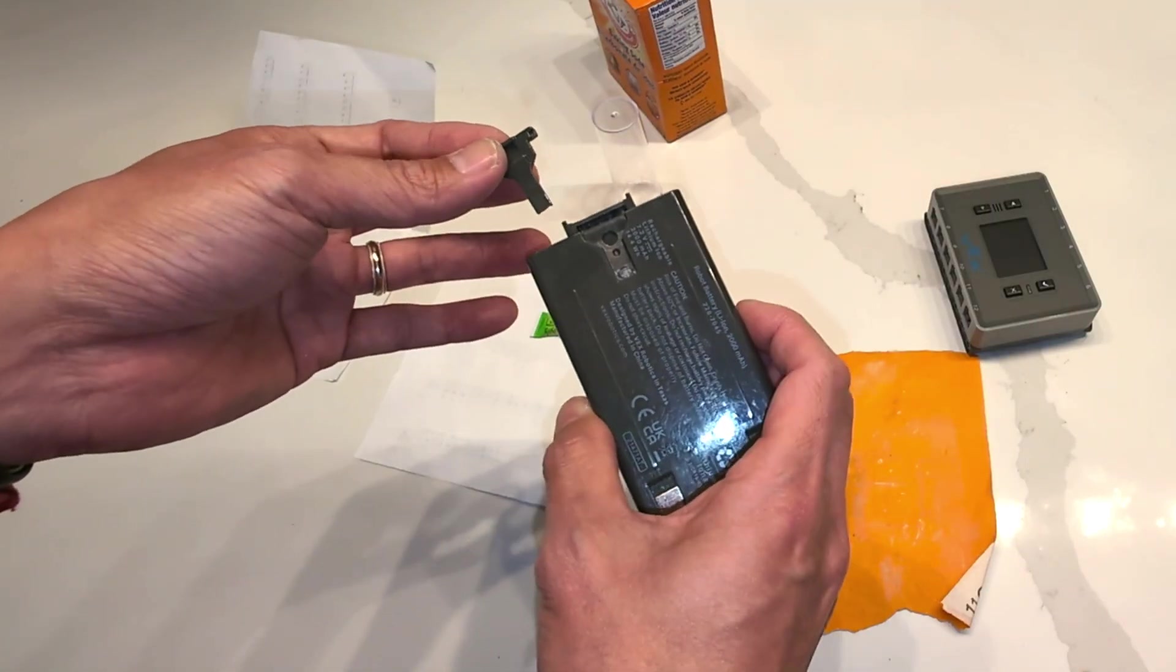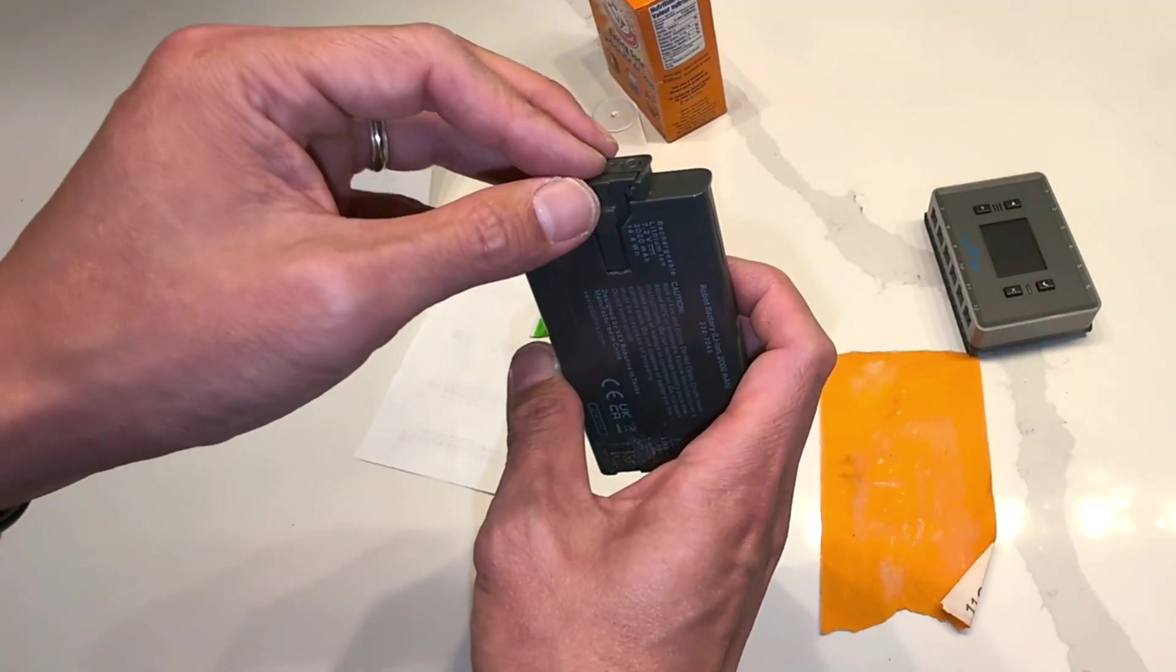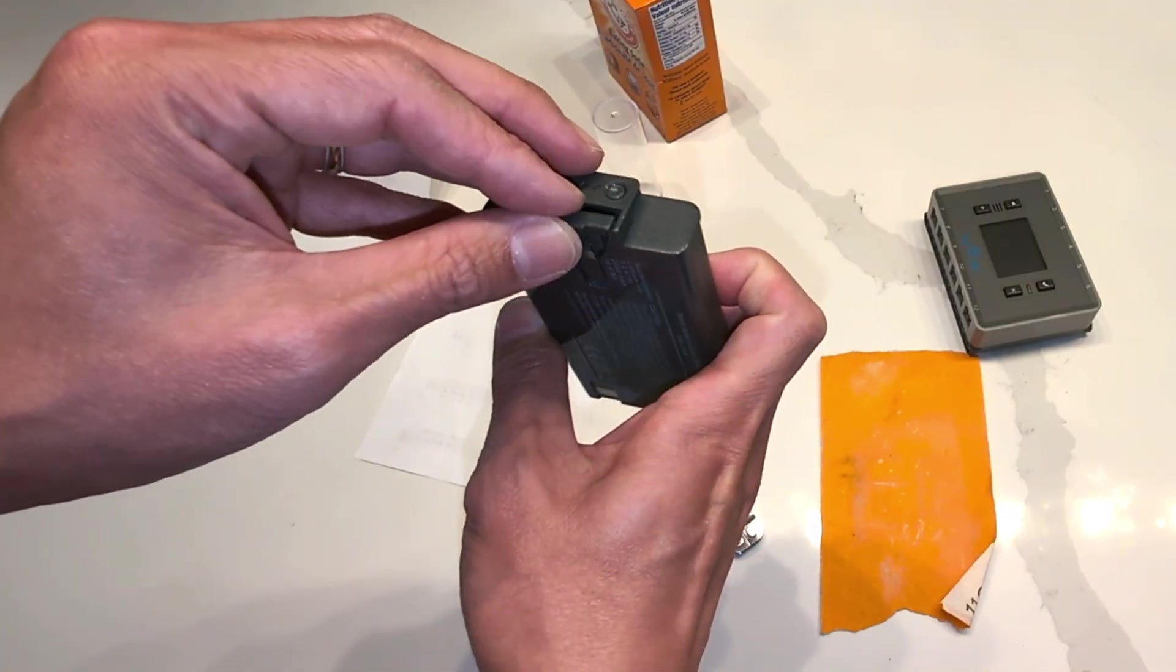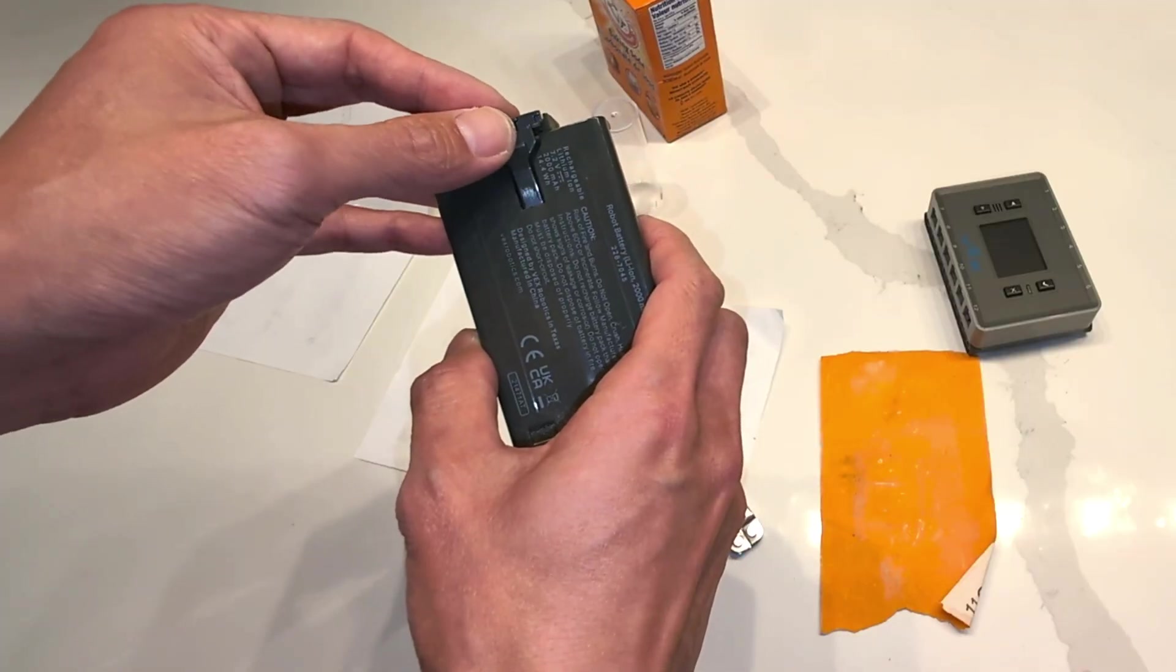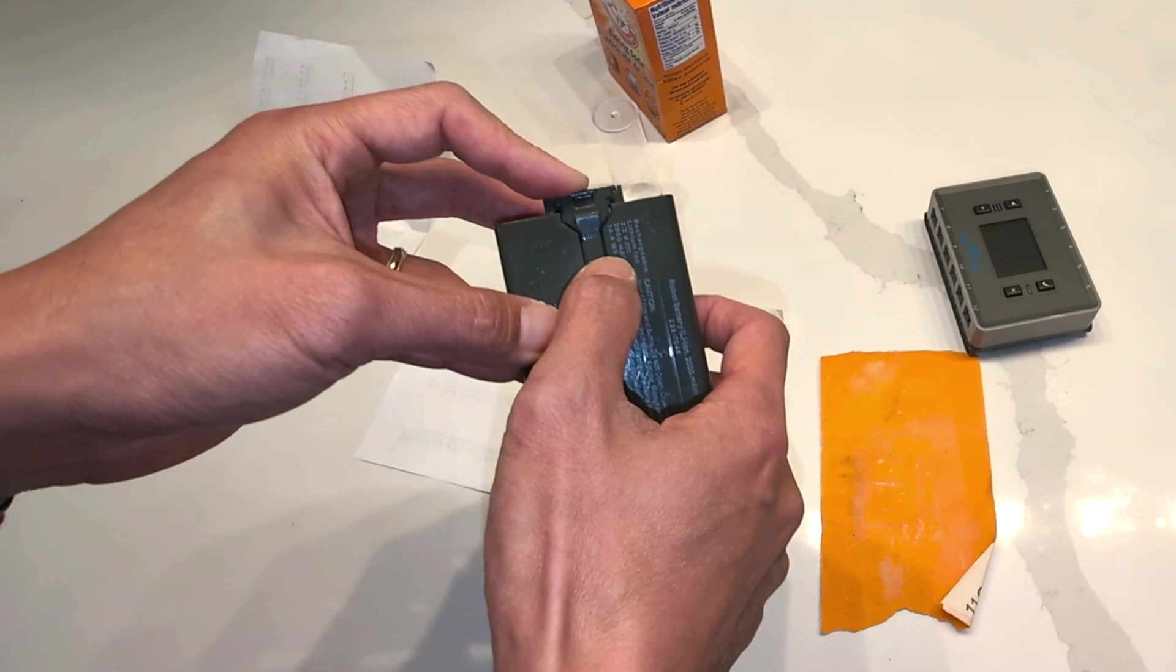Now before we start to figure out how to fix it, first of all you need to know that there's a slot here that actually slides in here. So when you're fixing, you don't want to glue it like this or else it gets stuck. You do have to slot it in here to do this.